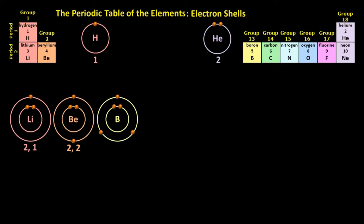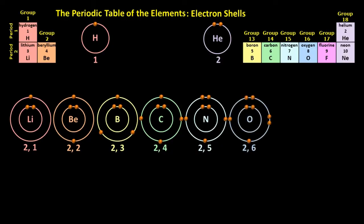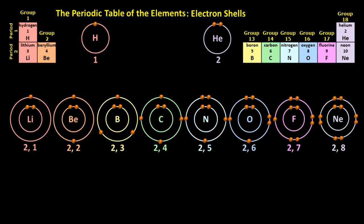Boron has an electron configuration of two, three. Carbon two, four. Nitrogen two, five. Oxygen two, six. Fluorine two, seven. And neon two, eight. Both of neon's electron shells are full.